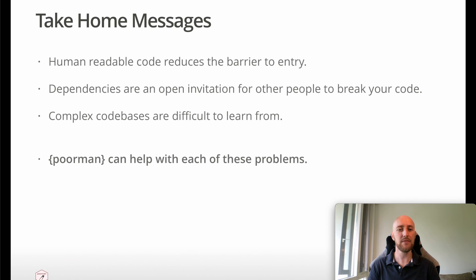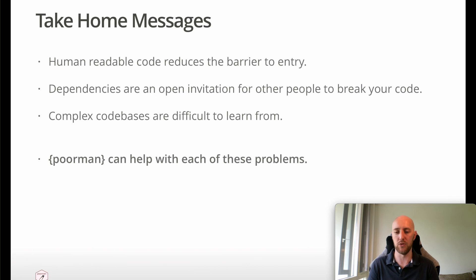So, take-home messages. Human-readable code reduces the barrier to entry for new users and new programmers. This human-readable API that dplyr affords is re-implemented via Pawman, and it's done in a dependency-free way — which is important because dependencies are an open invitation for people to break your code. We can manage these solutions, but if we can reduce them, that's even better. And complex code bases can be quite difficult to learn from — dplyr has a lot of abstraction and dispatch, so Pawman does this using base R, which is a great way to learn.